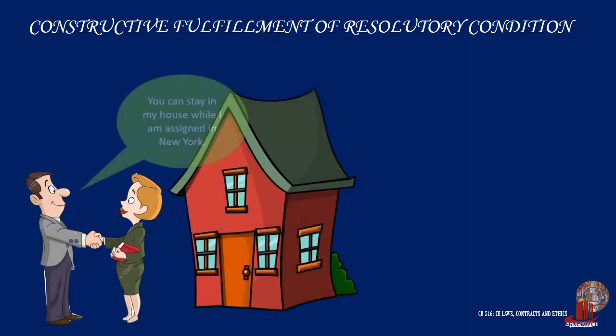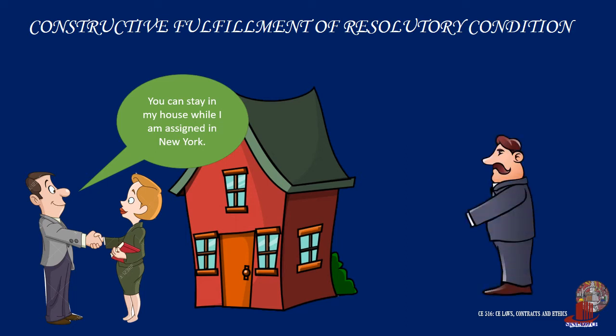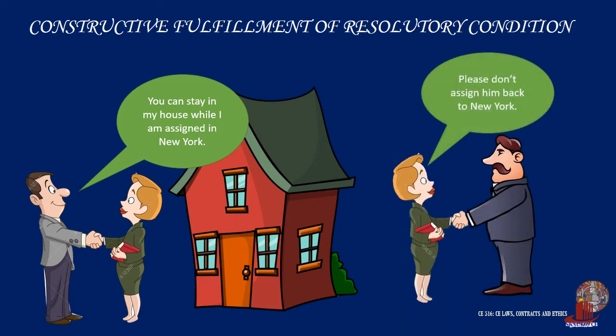Article 1186 applies also to an obligation subject to a resolutory condition with respect to the debtor who is bound to return what he has received upon the fulfillment of a condition. For example, a male worker obliges himself to allow a female colleague to occupy his house in New York as long as he is assigned by their company in the province. When the female colleague learned that he would be transferred to New York, she induced the president of the company to assign another person in his place. The obligation of the male worker is extinguished because the fulfillment of the resolutory condition was voluntarily prevented by his female colleague. Hence, the female colleague must vacate the house.